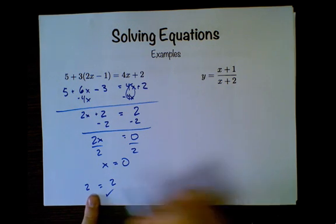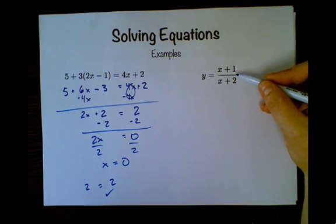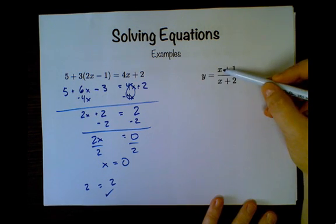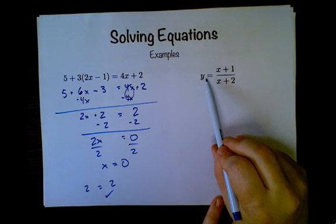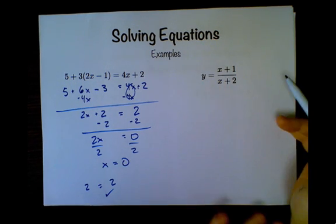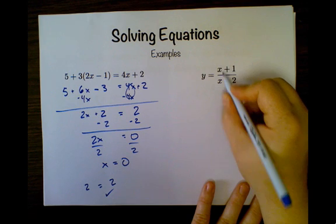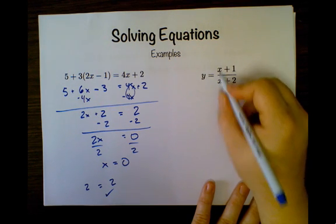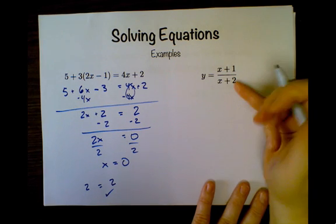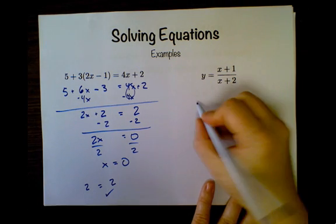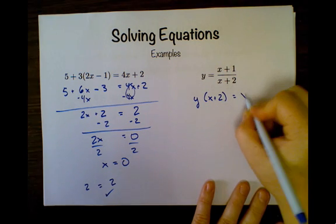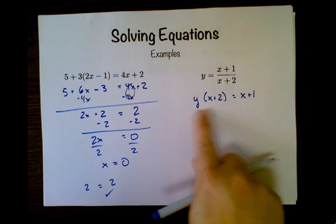Here I have two variables. It's already solved for y, right? Y is isolated. Just for giggles, I'm going to isolate x. So let's see, I have x on the top and the bottom of this fraction, that's mean and cruel. What I'm going to do is I'm going to multiply both sides by x plus 2. So I have y times x plus 2 equals x plus 1.